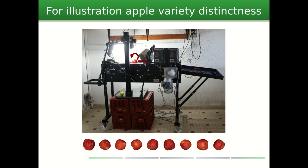To assess whether two varieties are sufficiently distinct, we first built our dataset by passing the apples through a machine with a conveyor belt, applying rotation and translation to the fruit. A camera above the conveyor belt takes pictures of the apples, giving shots of the fruit from every possible angle.